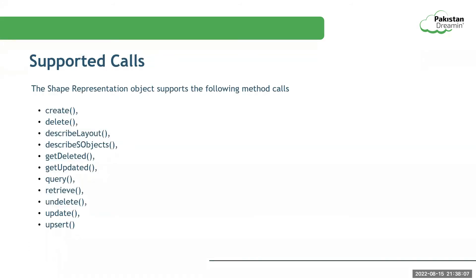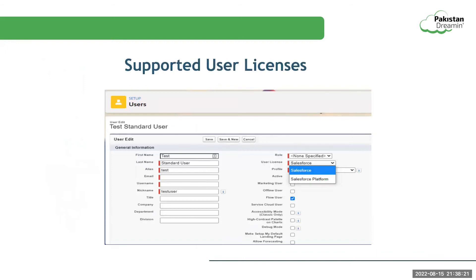The Shape Representation object supports the following method calls: Create, Delete, Describe Layout, Describe SObject, Get Deleted, Get Updated, Query, Retrieve, Undelete, Update, and Upsert. In addition to providing users with appropriate permissions, be sure to assign the Salesforce or Salesforce Platform license to the org shape users — other user licenses aren't supported at this time.